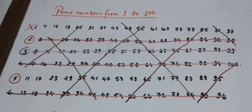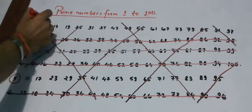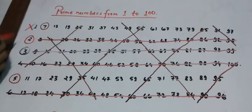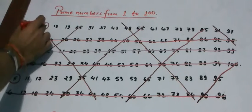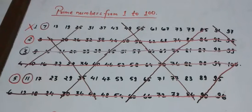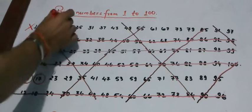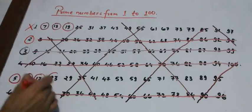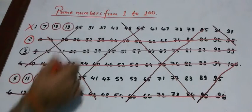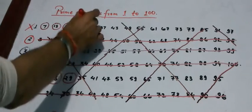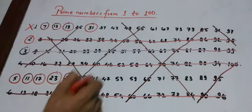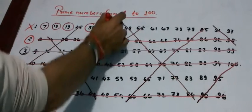Finally, all the numbers that are left are prime numbers below 100. Let's encircle all of them. Okay, so 2, 3, 5, 7, 11, 13, 17, 19, 23, 29, 31, 37, 43.